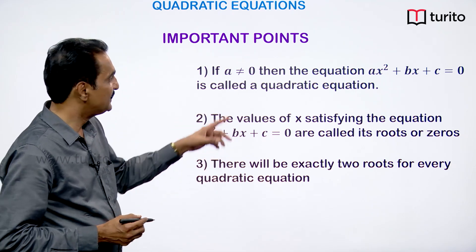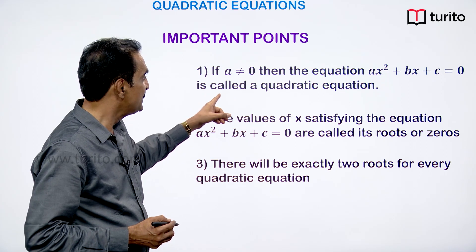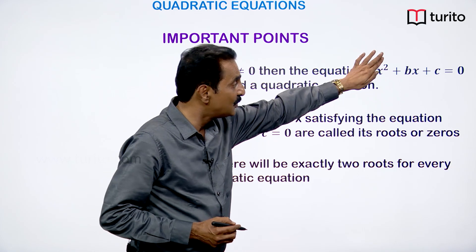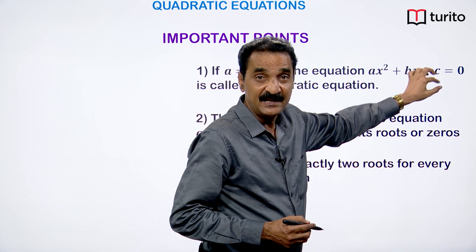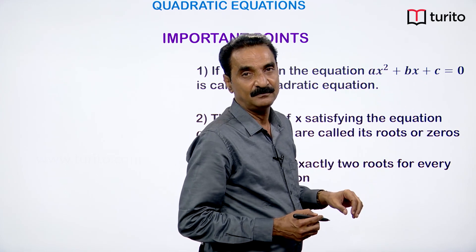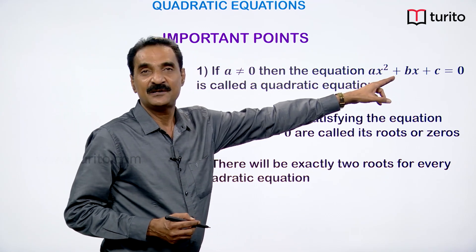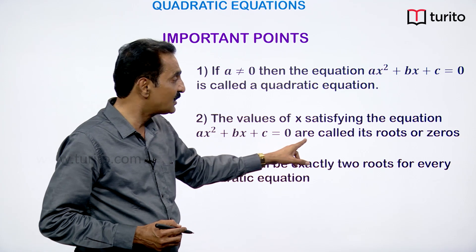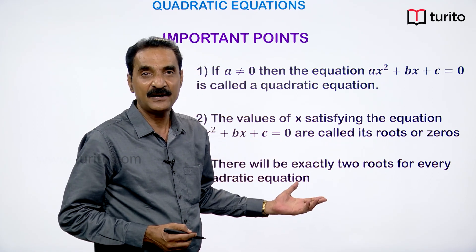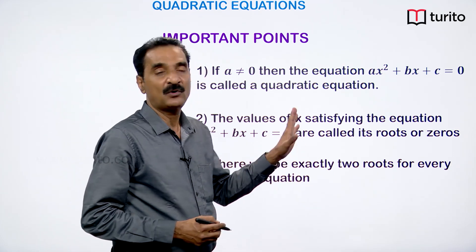If a ≠ 0, then the equation ax² + bx + c = 0 is called a quadratic equation. Why a ≠ 0? If a = 0, it becomes a first-degree equation. A second-degree equation in x is called a quadratic equation. The values of x satisfying this equation are called roots or zeros. There will be exactly two roots for every quadratic equation.